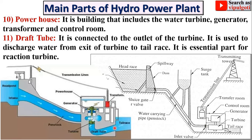The draft tube runs from the turbine outlet to the tailrace. It is used to discharge water from the exit of the turbine to the tailrace. It is an essential part for the reaction turbine. So the draft tube is particularly used for the reaction turbine. If the turbine is a Pelton wheel — that means an impulse turbine — then the draft tube is not required.